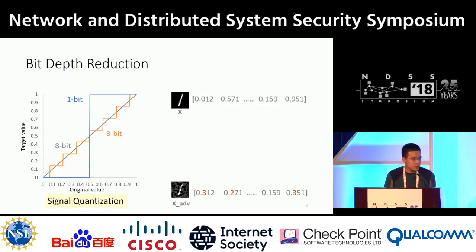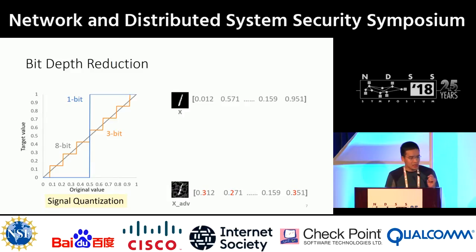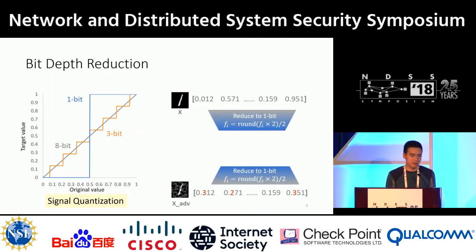In the signal processing field, continuous natural signals are typically quantized into discrete representations. For images, we often use 8-bit integers to encode each pixel, which contains 256 levels. We have found that for many image classification tasks, we don't need 8-bit encoding — fewer bits work the same — and it reduces the search space available to an adversary. Starting from a handwritten digit 1 at the top, we generated an adversarial example at the bottom. If we reduce the encoding bits from 8 to 1, the result image is very similar to the original one, while most of the adversarial perturbations have been filtered by the bit-depth reduction.